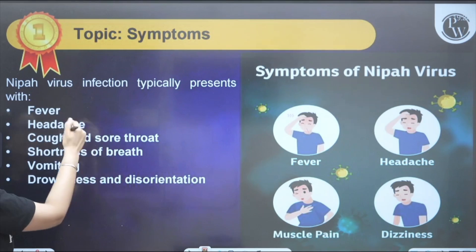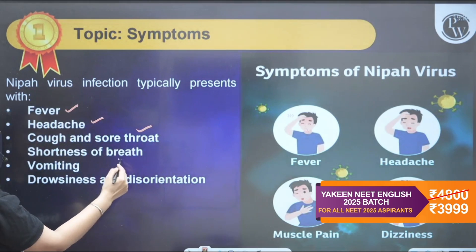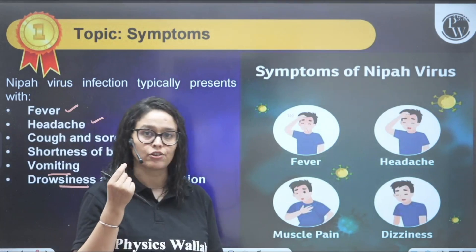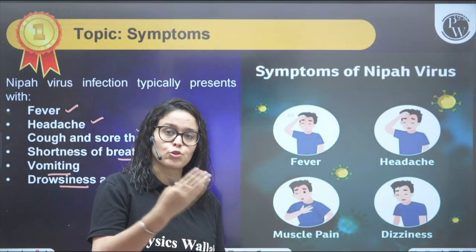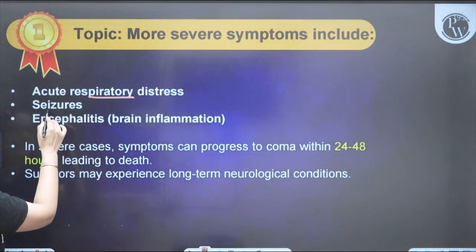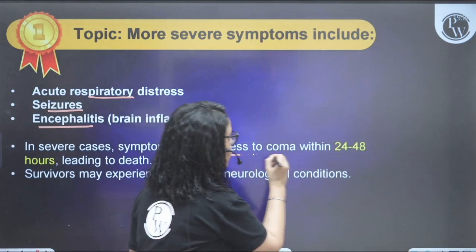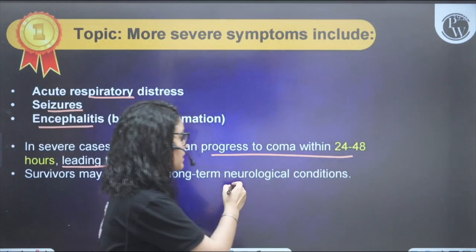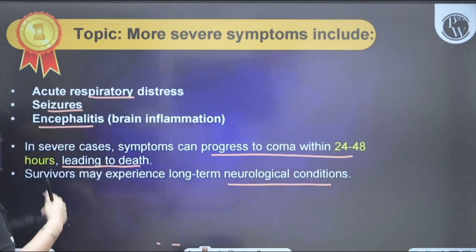Initial symptoms include fever, headache, cough, sore throat, shortness of breath, vomiting, drowsiness, and disorientation — flu-like symptoms combined with respiratory infection. More severe symptoms include acute respiratory distress, seizures, and encephalitis. In severe cases, symptoms can progress to coma within 24 to 48 hours, leading to death. Survivors may experience long-term neurological conditions.